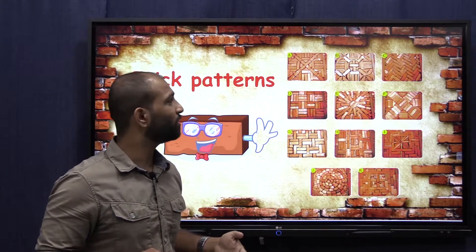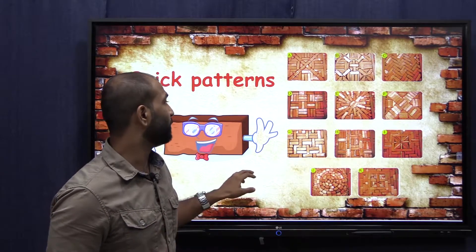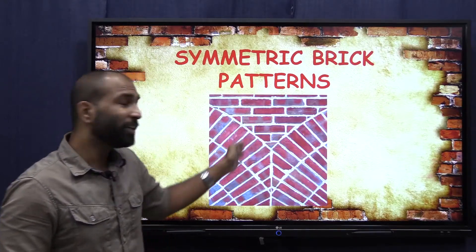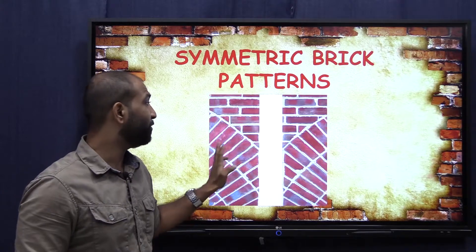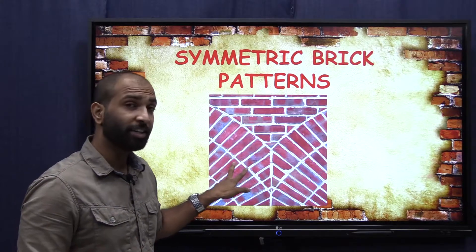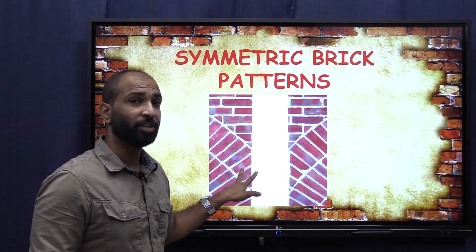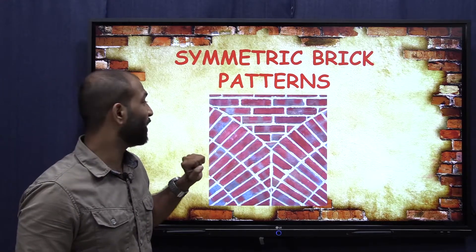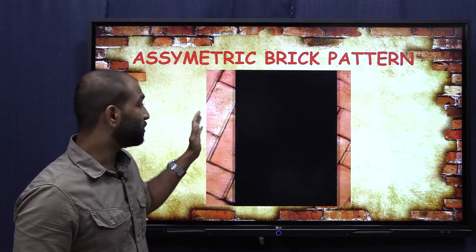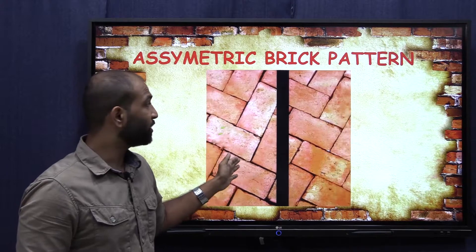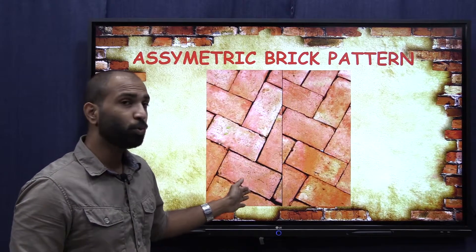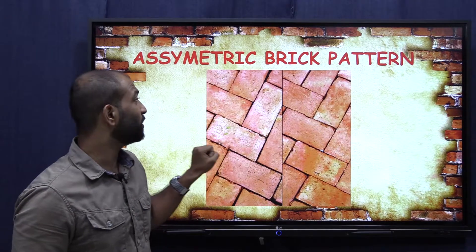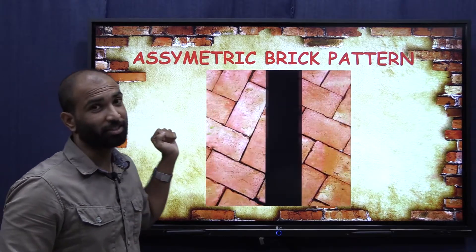Do you know what is symmetrical? If we split an image into two and we get two equal images, then it is called symmetric. And if we split another image into two but get two different images, then that is asymmetric.